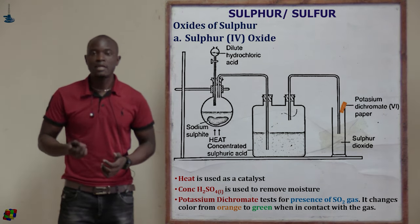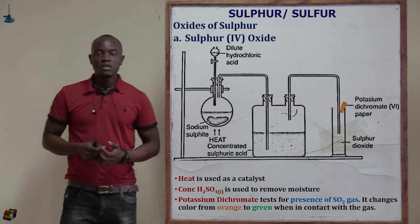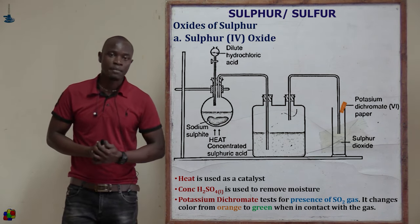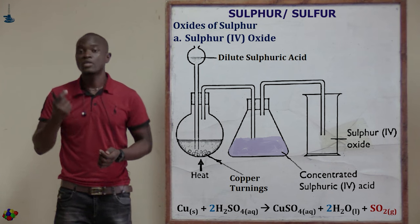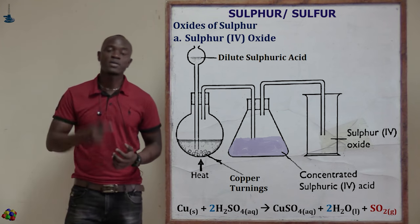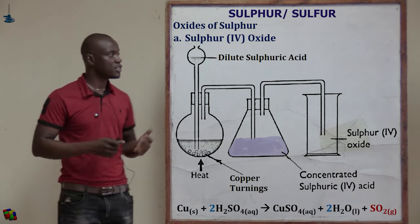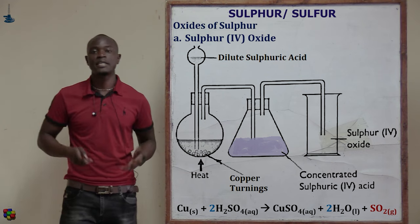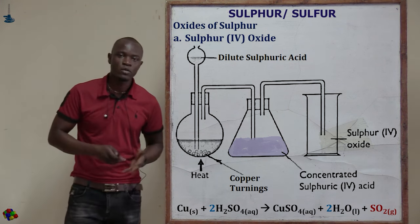The gas is dried by passing through concentrated sulfuric acid, and heat acts as a catalyst in this reaction. Apart from that, sulfur dioxide can also be prepared by reacting copper turnings with dilute sulfuric acid, producing sulfur dioxide gas plus water molecules plus copper sulfate in solution form.